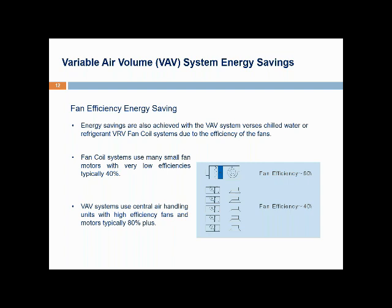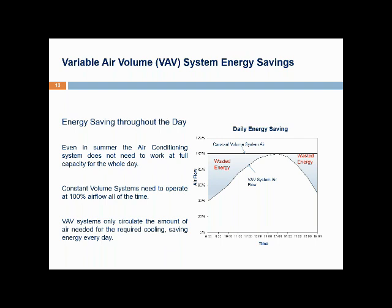Comparing VAV systems to fan coil systems — chilled water or VRF — the efficiency of small recirculation fans used with fan coil systems is very low, typically only about 40%. The efficiency of air handling unit fans and motors is typically around 80% or more, a big difference. Also, with fan coil systems the airflow is there whether it's needed or not, using more energy. VAV systems save energy throughout the day, every day. During non-peak cooling hours, the system only provides the amount of cooling needed to meet the actual load, avoiding wasting any energy.